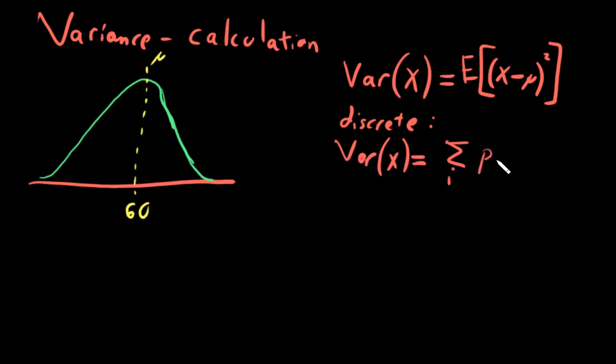times the probability that your variable is that value, multiplied by this inner term, the value of the variable at that index minus mu squared.